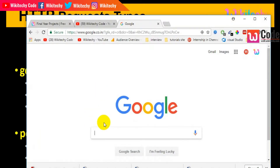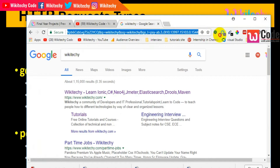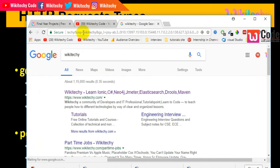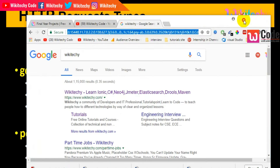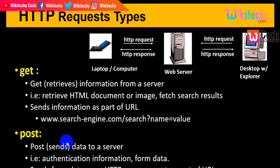For example, searching on wikiteki.com — you can see the search term as part of the URL. This is called a GET request, where request information is passed as part of the URL. POST, on the other hand, sends data to the server — authentication information, form data — everything is sent via POST.